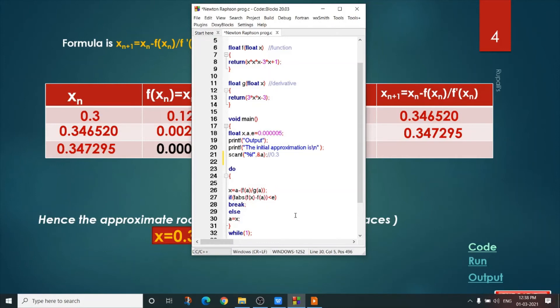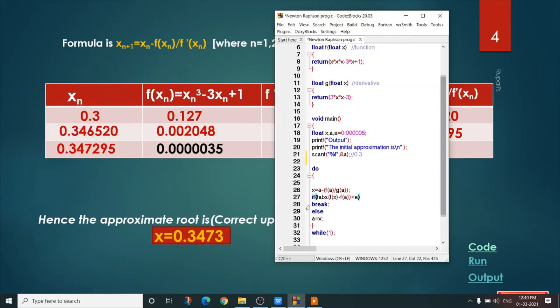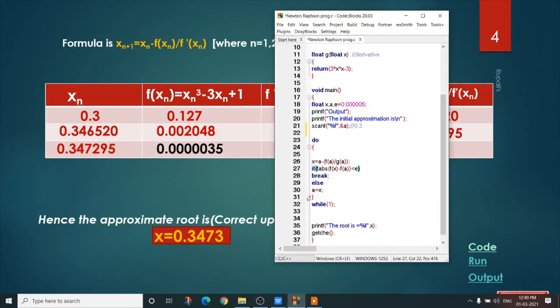Now, see when I have to stop. If absolute value of fx minus fl less than this value e, then I have to stop. I give one break statement and come out from the loop. Now I have to print the value of x. So the root is x.